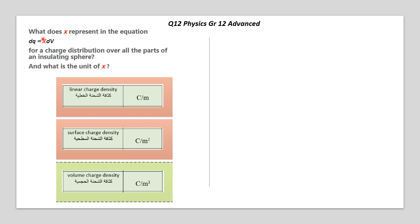So, what does x represent in this equation? dQ equals x — which we need to define — multiplied by dV. Here, V stands for volume. So, for a charge distribution over all the parts of an insulating sphere, and what is the unit of x?